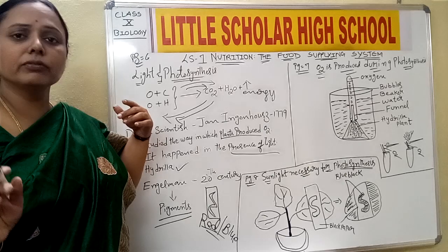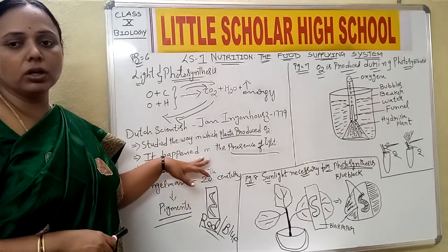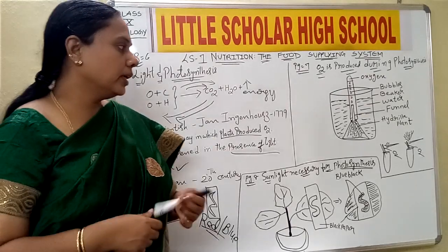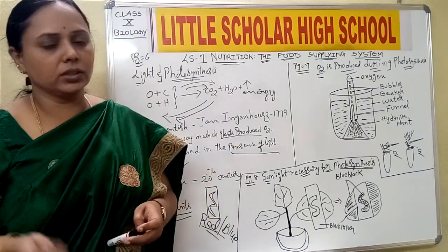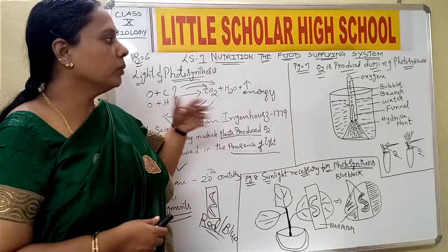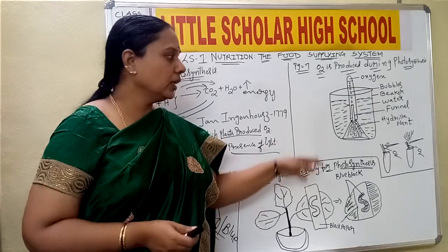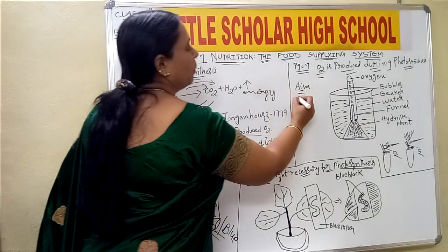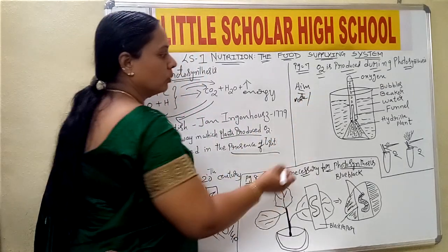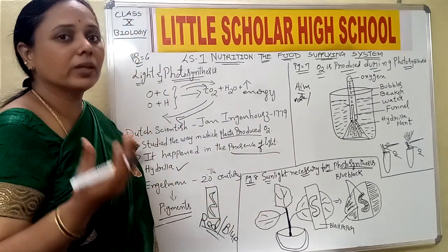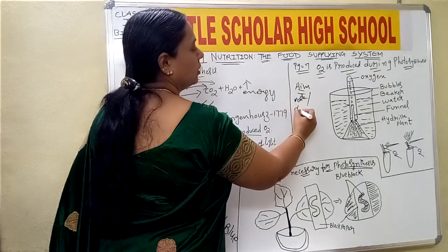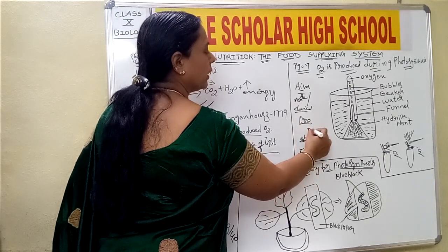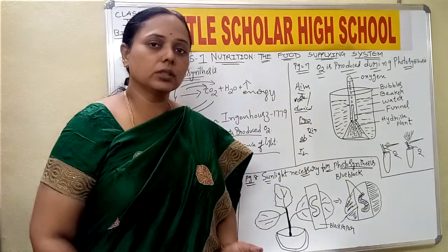Today we have seen about light and photosynthesis, the scientists who gave their concepts, and two experiments showing light as an essential factor of photosynthesis. In the next class, we will move further into chlorophyll, TS of leaf, and chloroplast. Before the next class, please go through all activities. When writing an experiment, make sure you write the aim, the materials or apparatus needed, chemicals required such as betadine solution, procedure, observation, and inference, supported with a diagram. This is how you need to present experimental answers in the exam. Thank you.